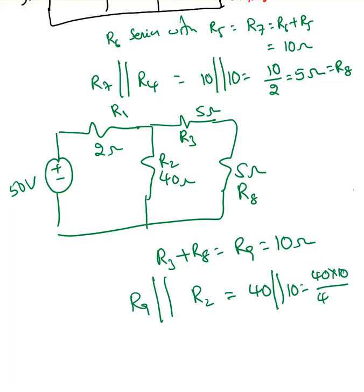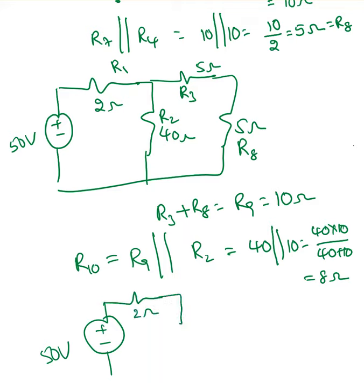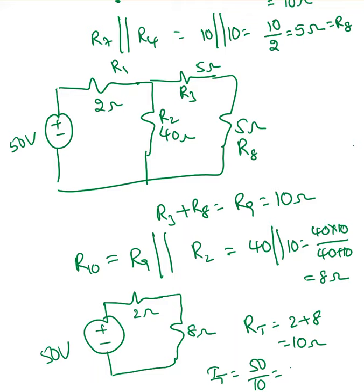R9 parallel with R2: 40 parallel with 10 equals (40 × 10) / (40 + 10) = 8 ohms — I'll label that R10. The redrawn circuit now has 50 volts, 2 ohms, and 8 ohms. Total resistance R_total = 2 + 8 = 10 ohms. So I_total = 50 / 10 = 5 amperes. The source is supplying 5 amperes.